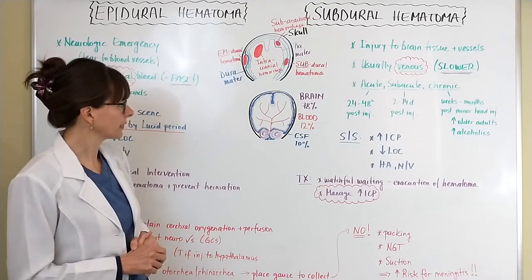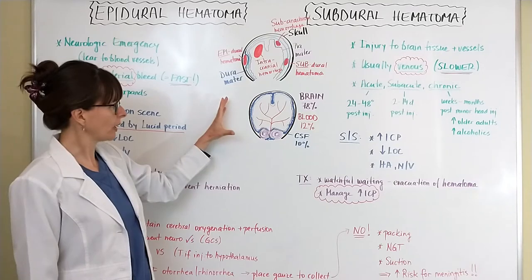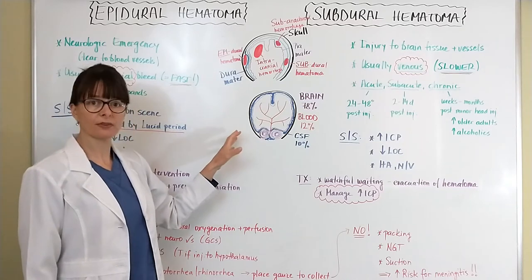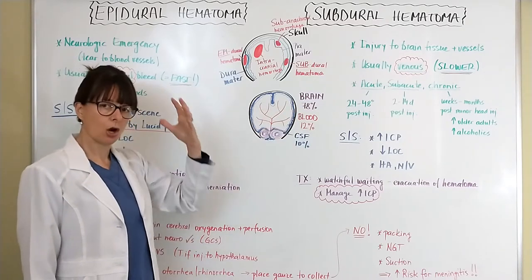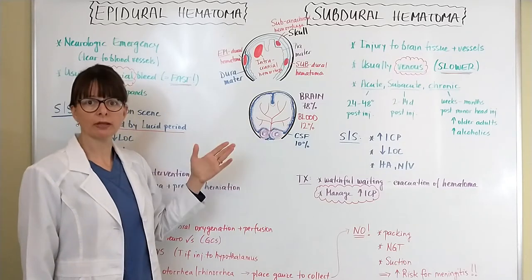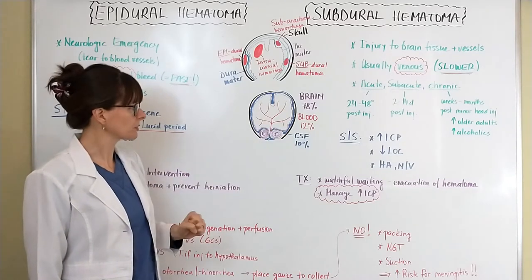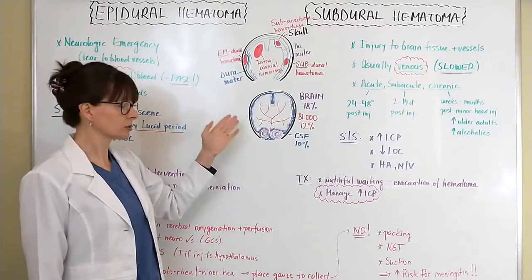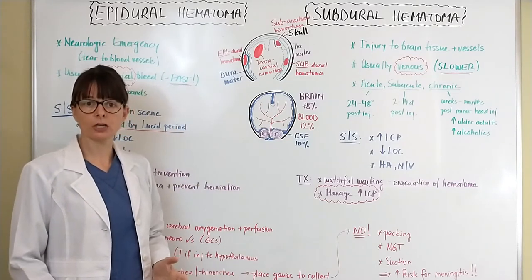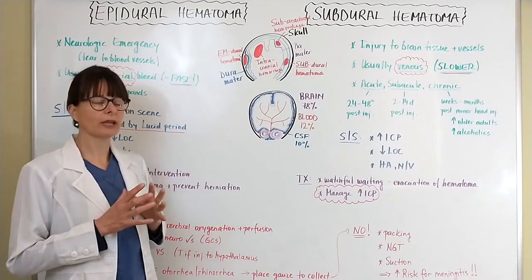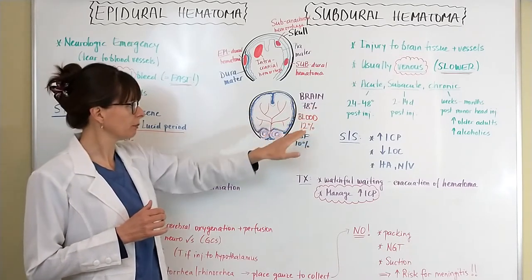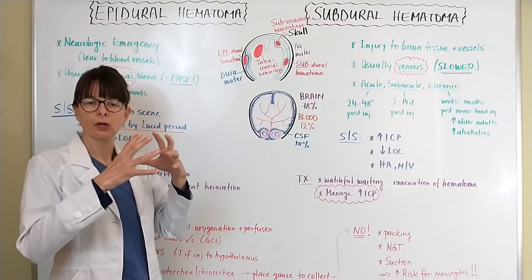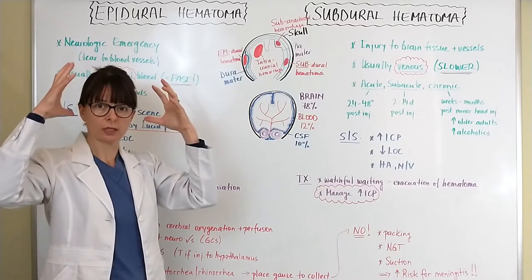We need to keep in mind that in our cranial cavity there are three compartments. First, we have the brain, which consists of about 78% of the intracranial contents. Then we have blood from all the vessels that supply the brain, and we have cerebrospinal fluid, which is about 10%. The skull protects the head from outside injury, but if one of those compartments — brain, blood, or CSF — takes up too much space, there is nowhere else for the others to go, because the skull is a closed cavity.